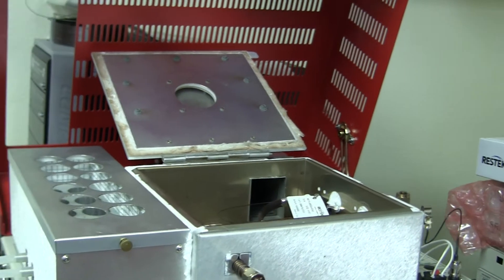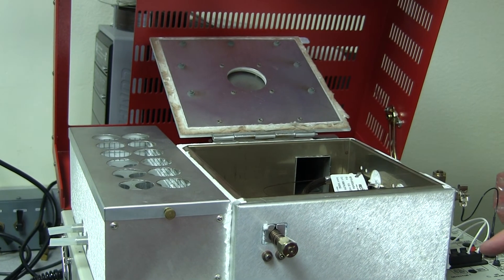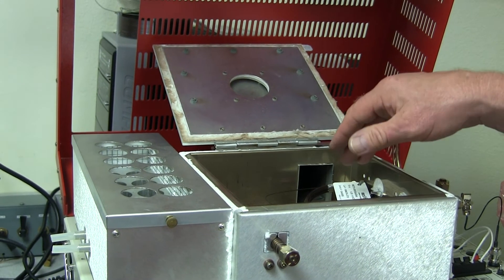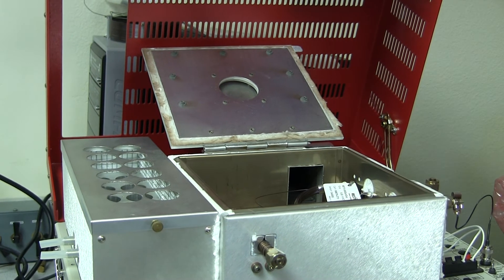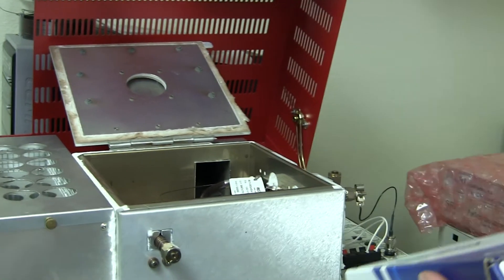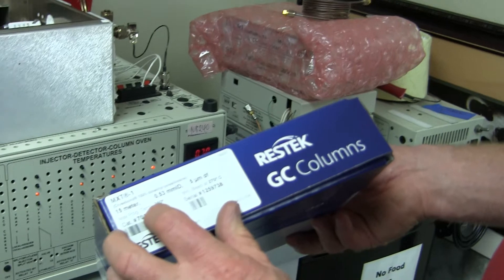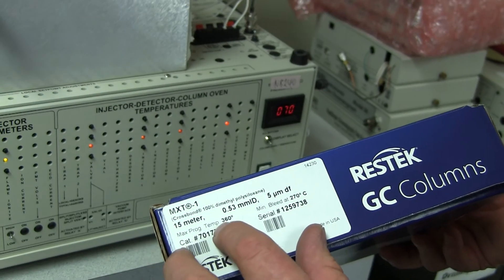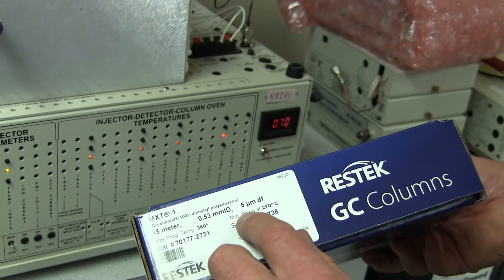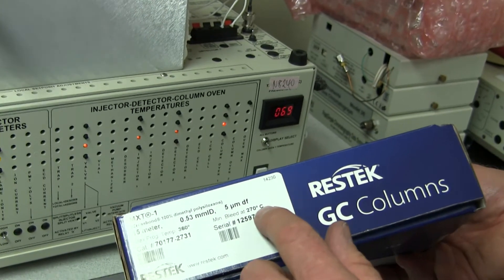But you have to know which column it is that you have in your oven because some columns don't have that high of a temperature limit. For instance, here's another column from Restek, MXT 1, says maximum program temperature 360 degrees and minimum bleed at 270 degrees.